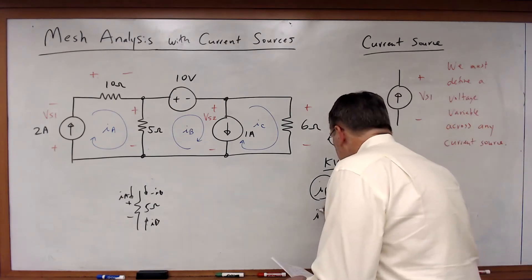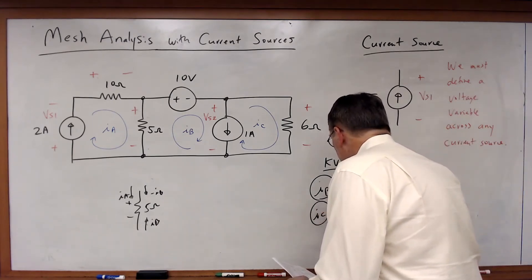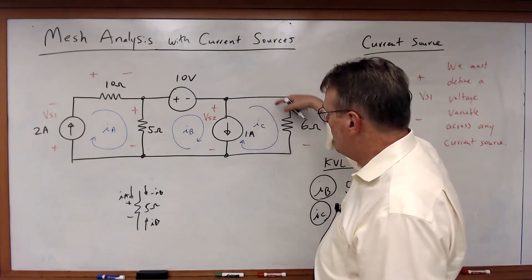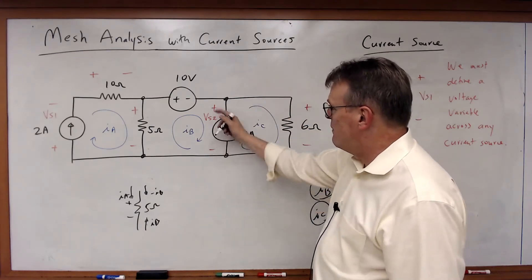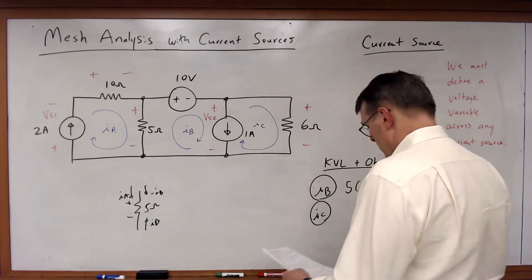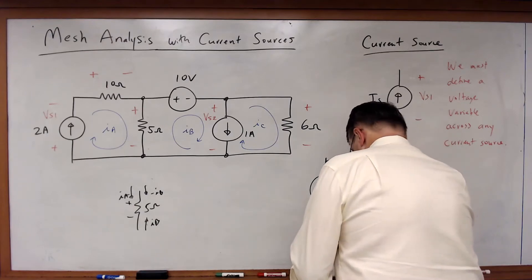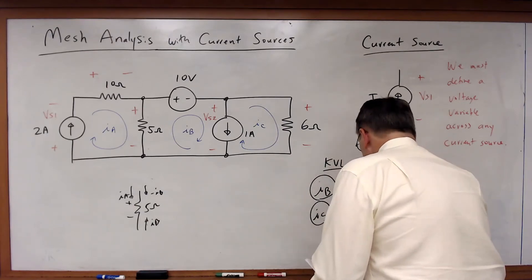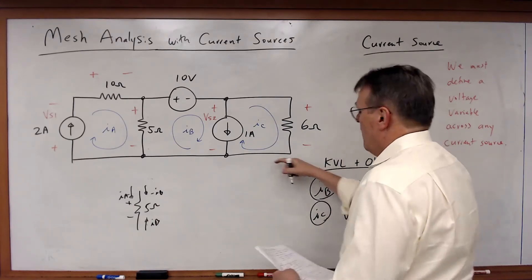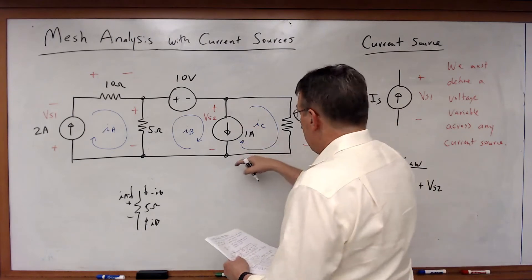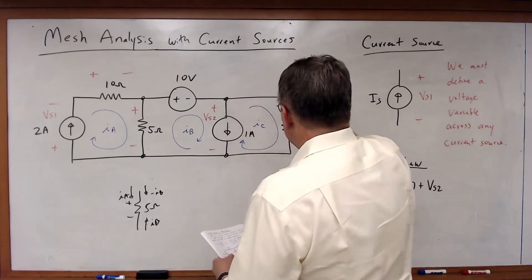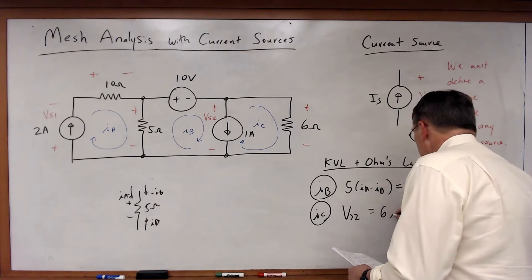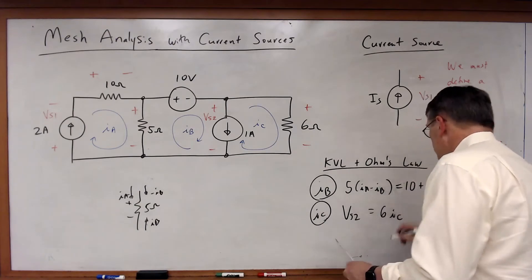For my Ic mesh, going clockwise around, VS2 is a rise, and that will be equal to 6Ic, which is a drop.